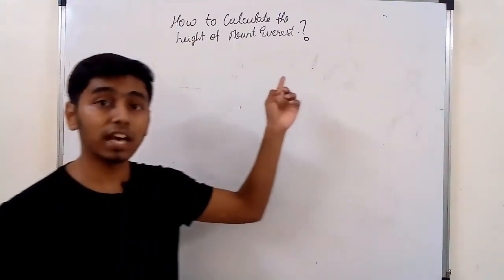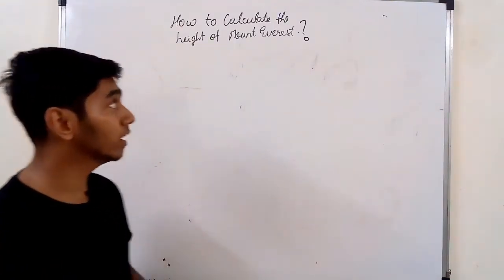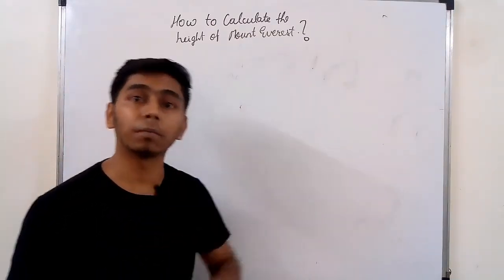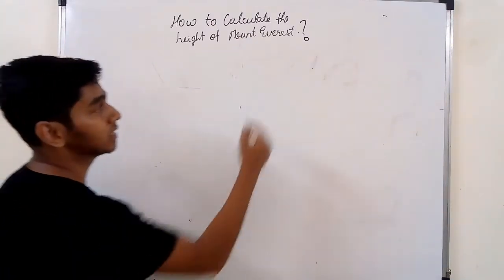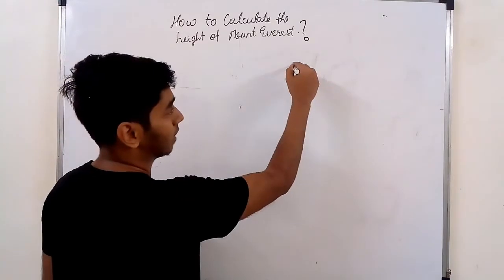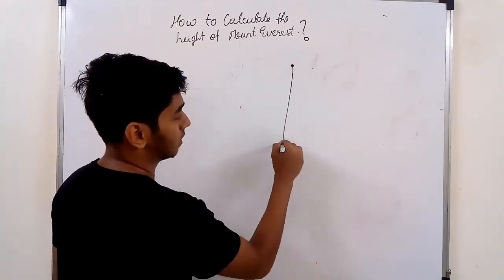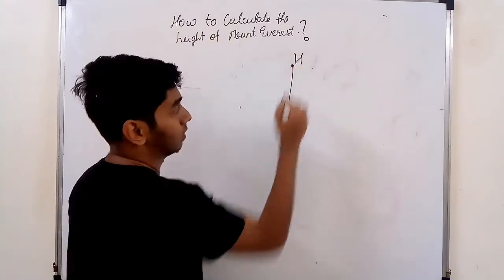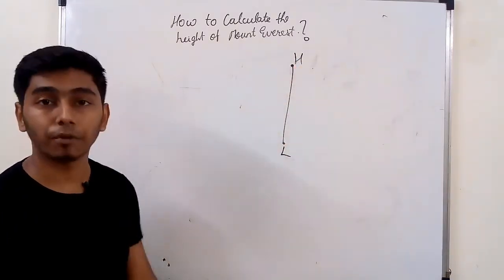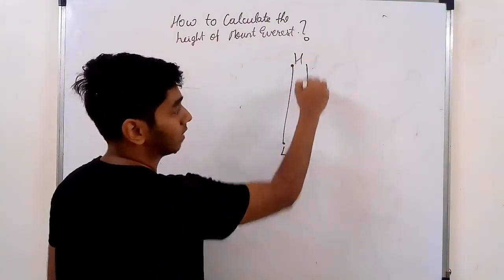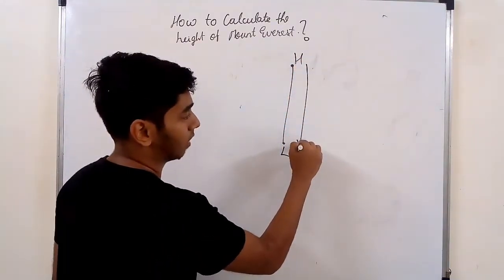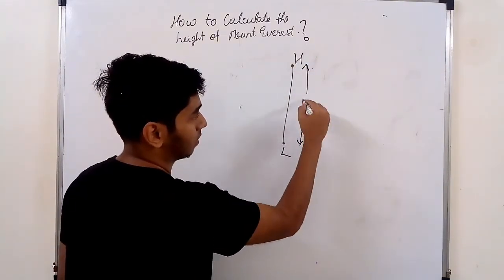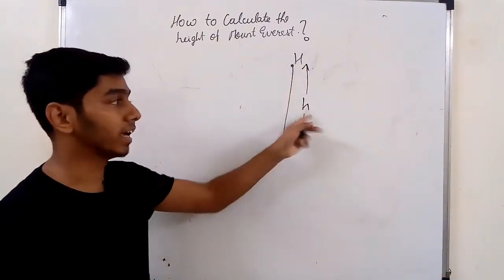They actually used trigonometry. So we'll see the two examples one by one. Let's say this is the building — the lowest point and the highest point. Let the height be H.